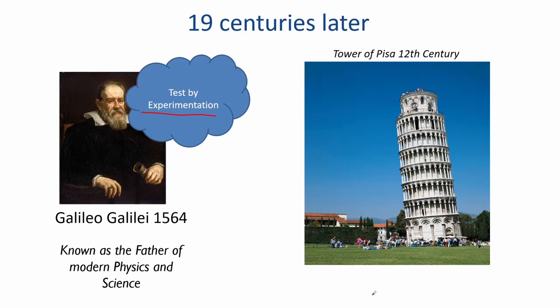Galileo studied several things that have become a basis of physics and engineering. He studied concepts about velocity, gravity, inertia, and projectile motion. One important thought that he contributed is testing through experimentation, which has changed how we do scientific studies. This thought has revolutionized the concept of freely falling bodies.